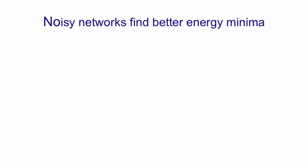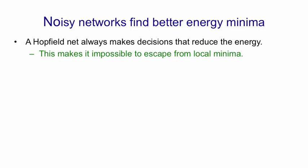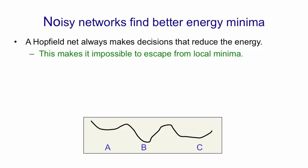I'm now going to introduce the idea that we can find better minima by using noise. A Hopfield net always makes decisions that reduce the energy, or if it doesn't change the state of a unit the energy stays the same. This makes it impossible to climb out of a local minimum. If you look at the landscape here, if we get into the local minimum A there's no way we're going to get over the energy barrier to get to the better minimum B, because we can't go uphill in energy.